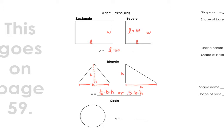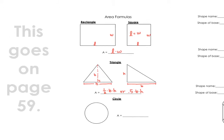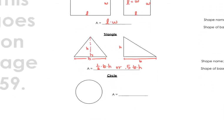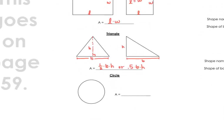For a circle, the dimension we look at is the radius, and the way we find the area of a circle is pi times radius squared. If you're given the diameter, just divide that by two.